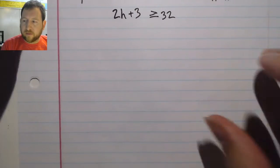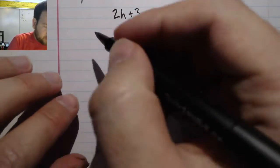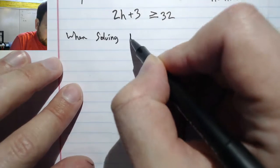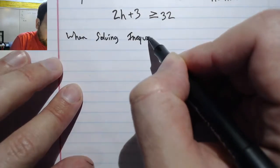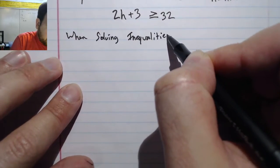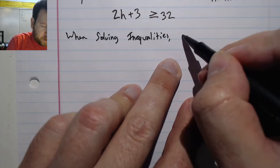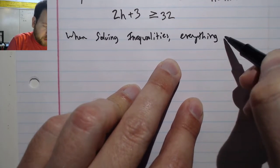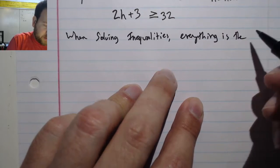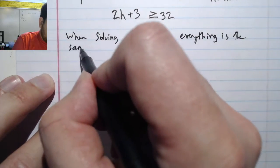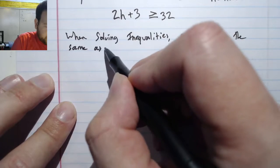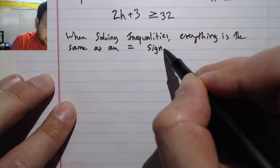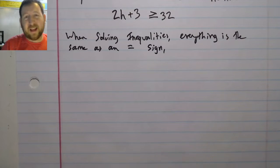For this section we're going to be talking about how to solve these, and what's nice is we have a couple of rules that we can use when solving inequalities. Everything is the same as an equal sign, except for two things.